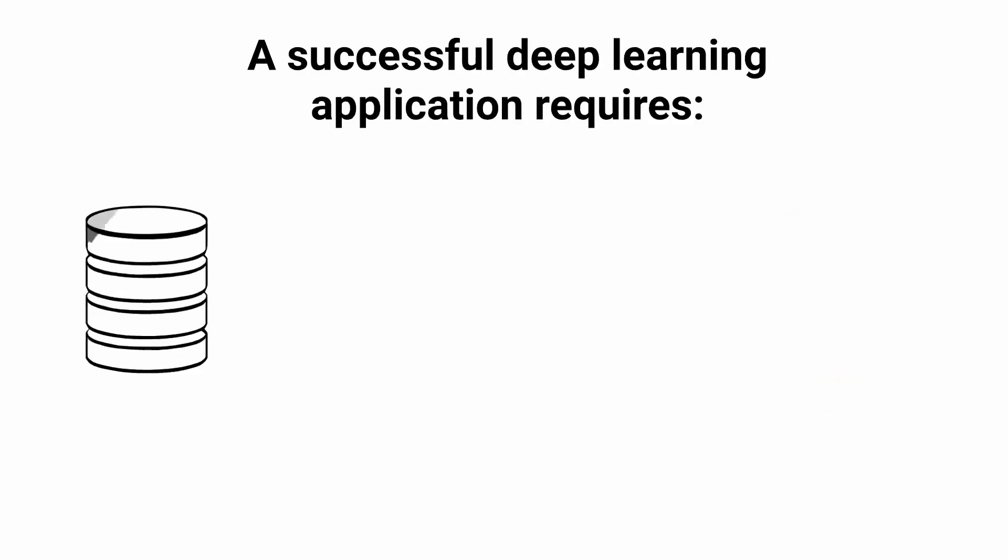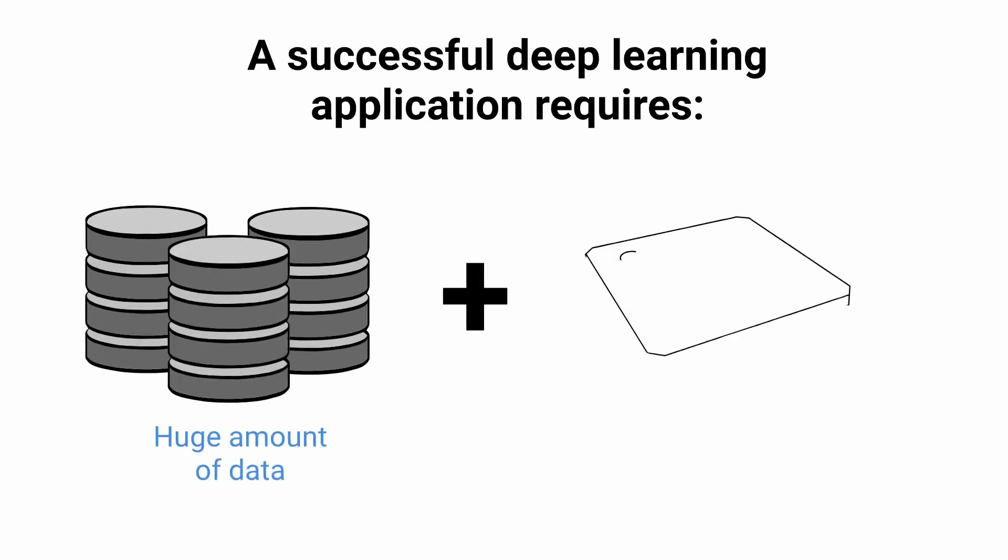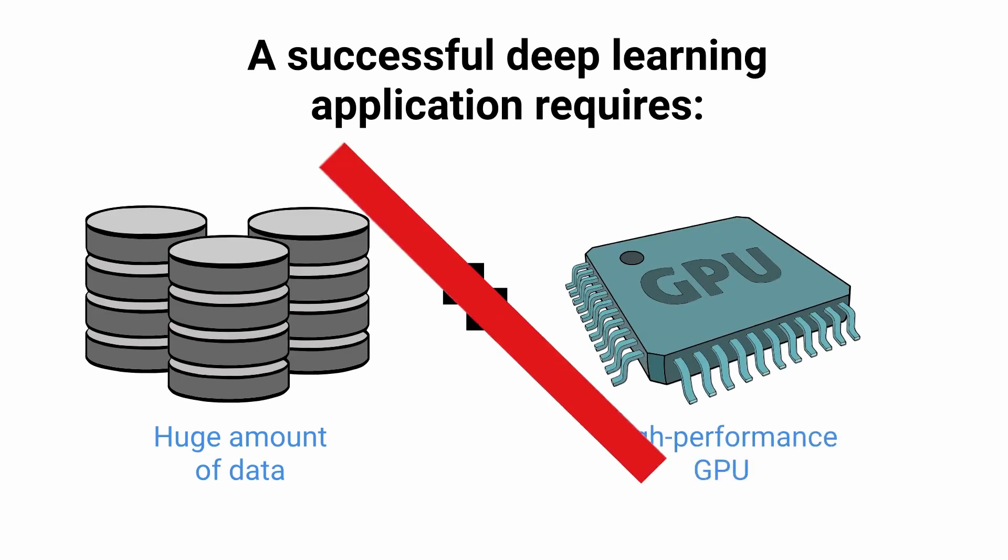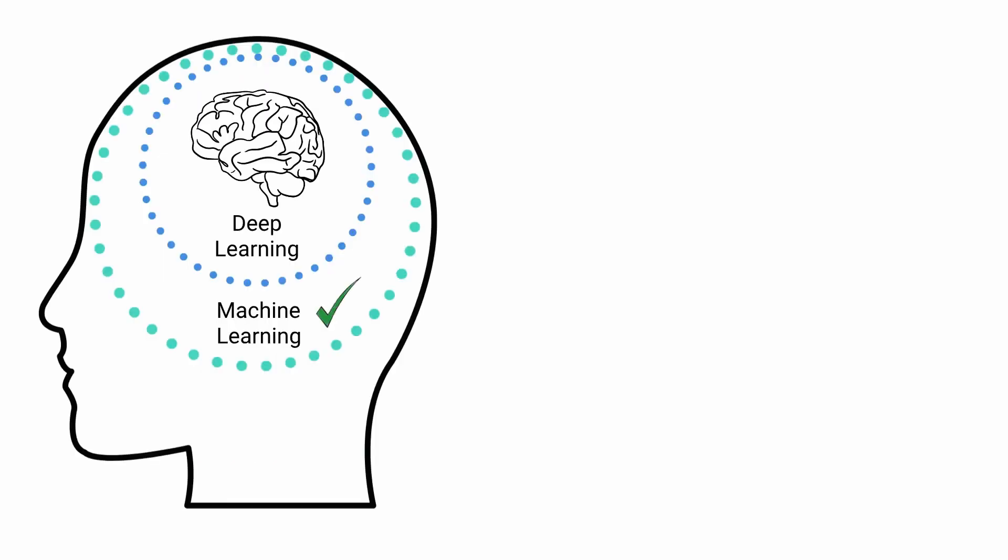For example, a successful deep learning application requires a huge amount of data to train the model, as well as GPUs or graphics processing units to process your data rapidly. When choosing between machine learning and deep learning, consider whether you have a high performance GPU and lots of labeled data. If you do not have either of those things, it may make more sense to use machine learning instead of deep learning.